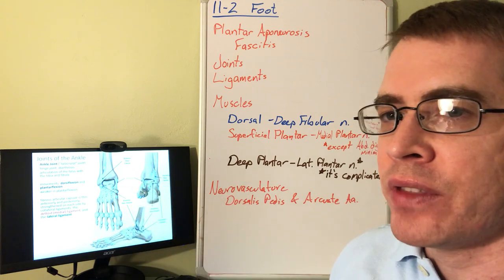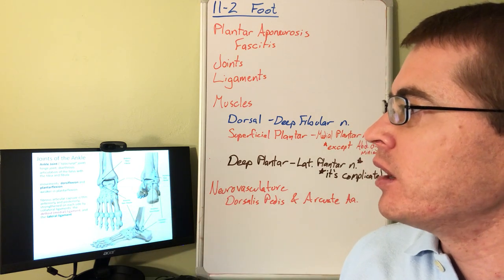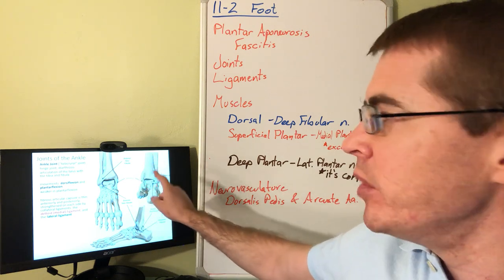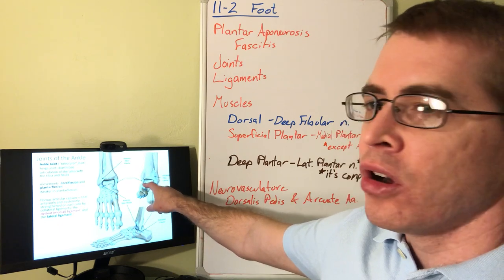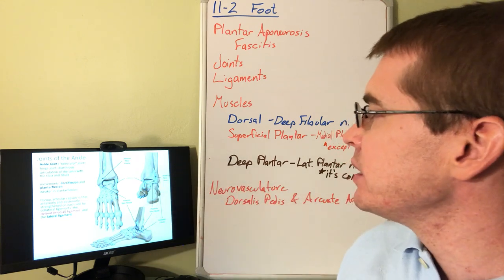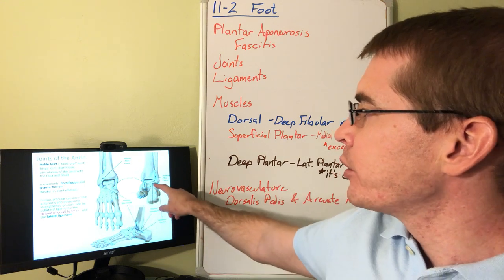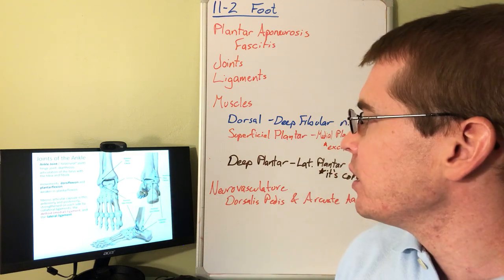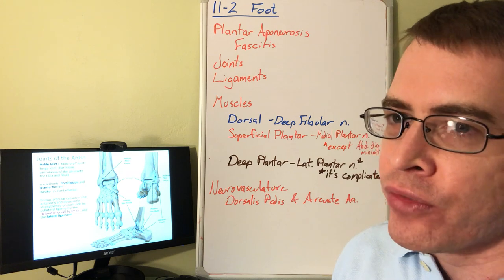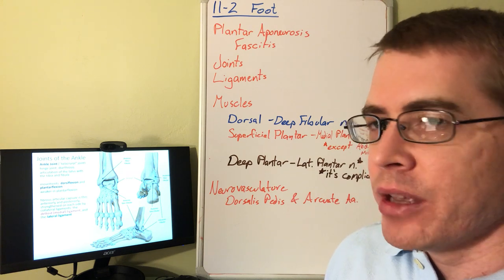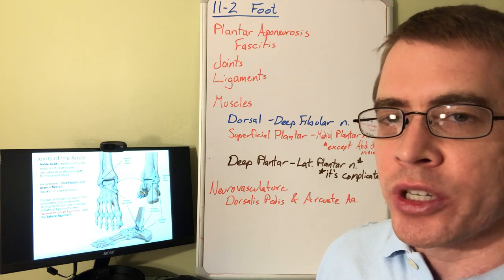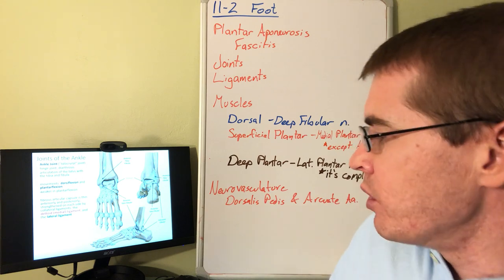Moving on, let's talk about the joints of the ankle. With any diarthritic synovial joint, we're going to have collateral ligaments. At the ankle, we have a medial collateral ligament — also called the deltoid ligament — and a lateral collateral ligament. The lateral collateral ligament is composed of three named ligaments: the anterior talofibular, the posterior talofibular, and the calcaneofibular. These ligaments are simply named after the bones to which they attach.